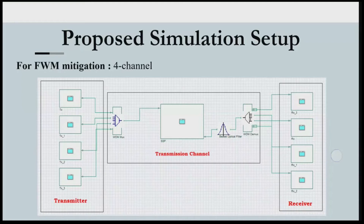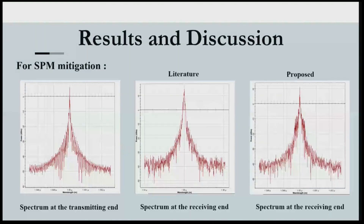Looking at the OSNR graph, the proposed setup marked in the red line is much better than the literature. These graphs were plotted using Origin software. The power-versus-wavelength graphs confirm spectral broadening — at the transmitting end the pulse is very narrow, but at the receiving end it broadens. Compared to the literature result in the middle, the proposed setup using amplitude modulation shows much lesser broadening. The eye diagram for 400-kilometer transmission shows a clear and sharp eye opening.